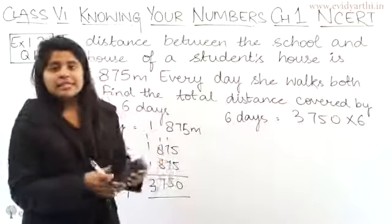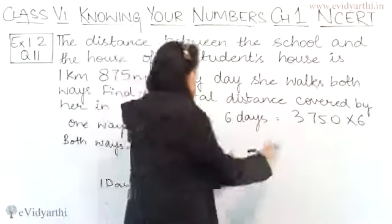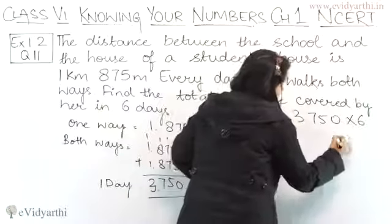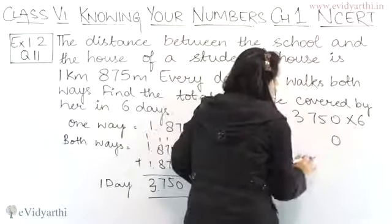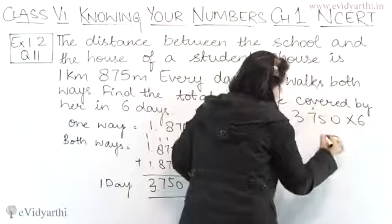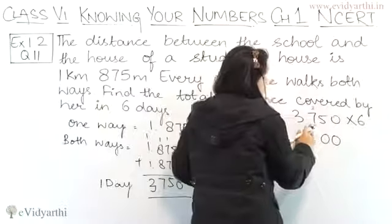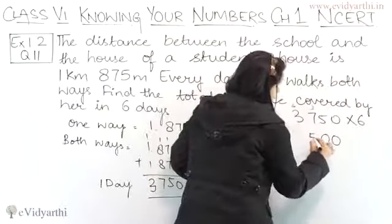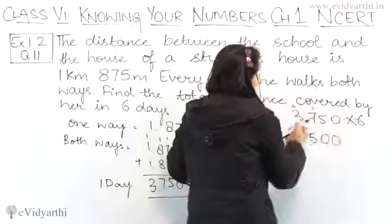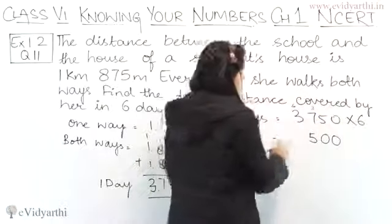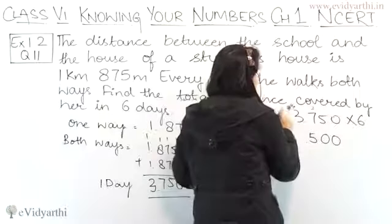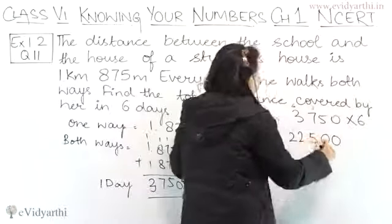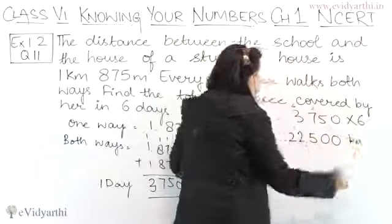We multiply the one-day distance by 6: 6 into 0 is 0, 6 into 5 is 30 — write 0 carry 3, 6 into 7 is 42 plus 3 is 45 — write 5 carry 4, 6 into 3 is 18 plus 4 is 22. So we get 22.500 km.